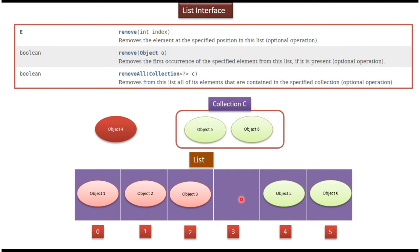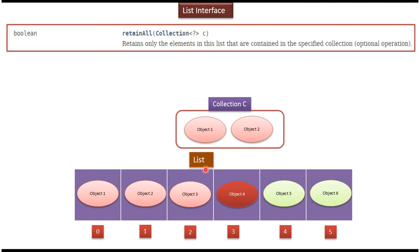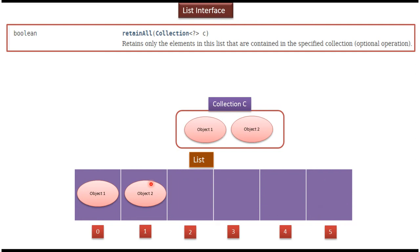Suppose I want to remove a group of objects from the list. Whatever objects I want to remove, I have to put them in a collection. So I put Object 5 and Object 6 in collection C and pass the collection to the removeAll() method, which will remove Object 5 and Object 6 from the list. Similarly, the retainAll() method retains Object 1 and Object 2 and removes all other objects from the list.